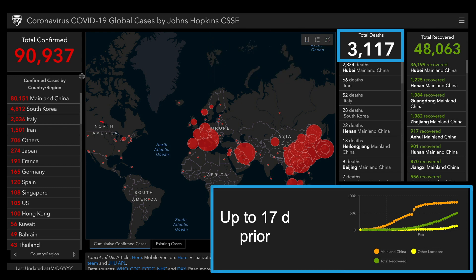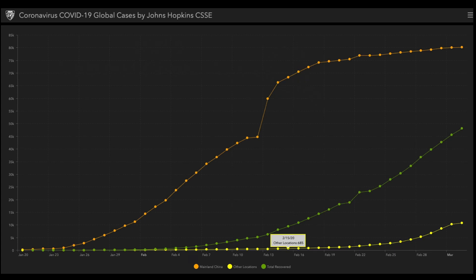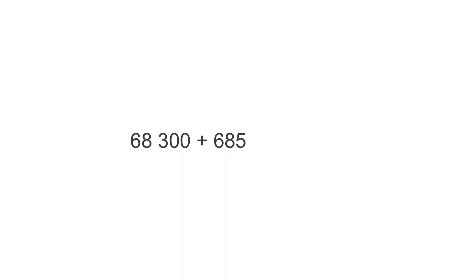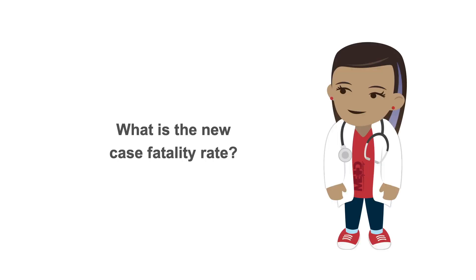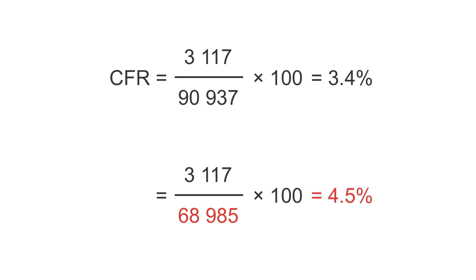This number can be retrieved by enlarging the inset on the map. Since these numbers were taken from March 3rd, going back 17 days means we need the total cases from February 15th. On that day, the number of total cases in mainland China was 68,300, and the total confirmed cases in other locations was 685, giving 68,985 total cases on February 15th. Using this lag time of 17 days: 3,117 divided by 68,985 times 100 equals 4.5%.